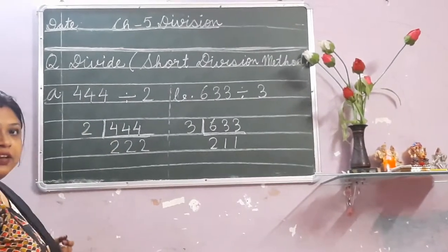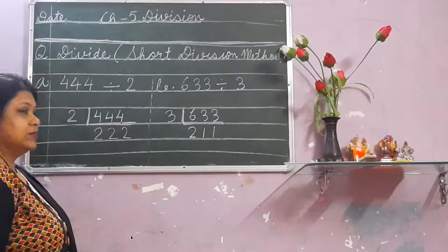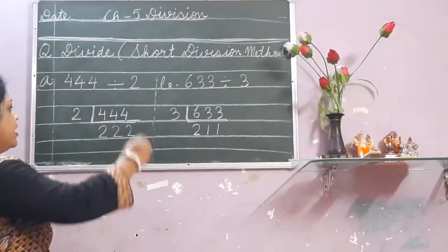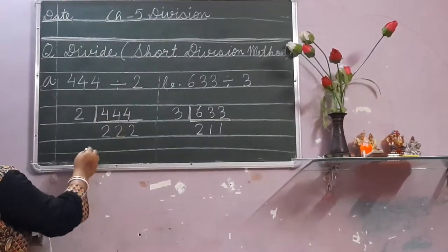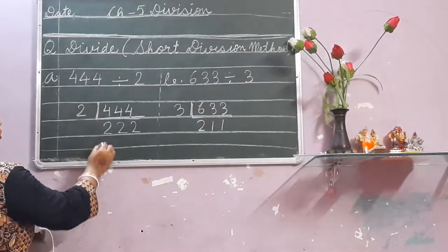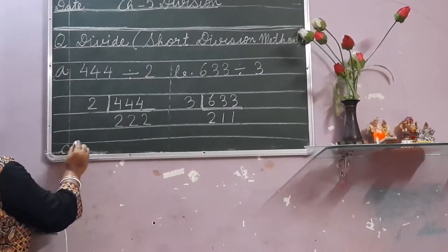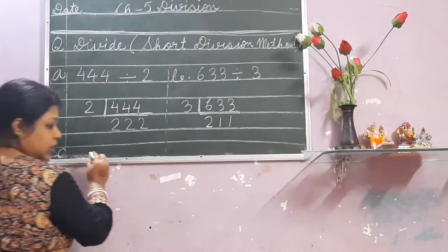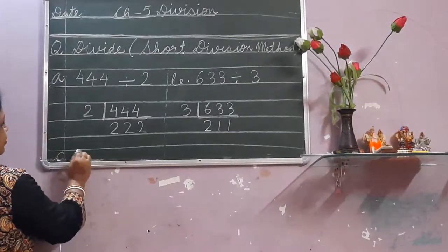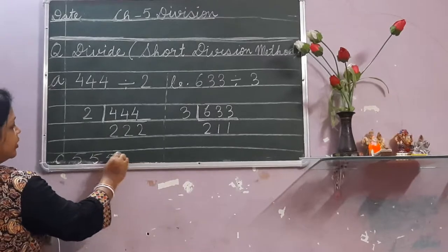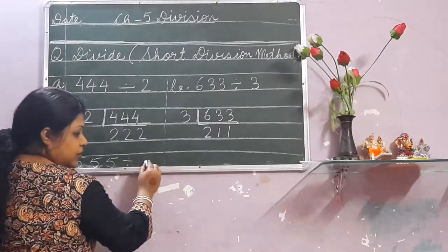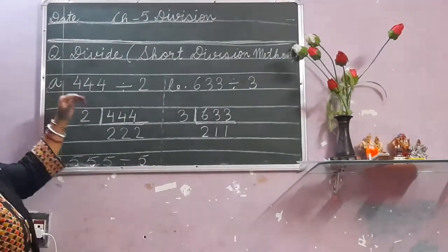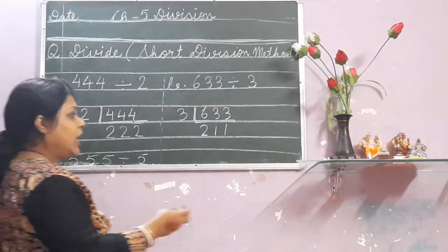Did you understand everybody? This way you will do. And when you will do number C, remember to leave one line and write number C after leaving one line. Write the question — like 555 divided by 5 — and then again follow the same pattern.